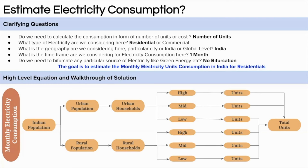After that, we get the units consumed monthly by different classes across urban and rural households, sum it up, and get the total units of electricity consumed in India in one month. Indian population is around 1.4 billion. Urban population contributes roughly 30% and rural population 70%, giving 400 million people in urban areas and 1,000 million in rural areas. We assume an average household size of 4 in urban areas, giving around 100 million urban households, and 5 in rural areas, giving around 200 million rural households.